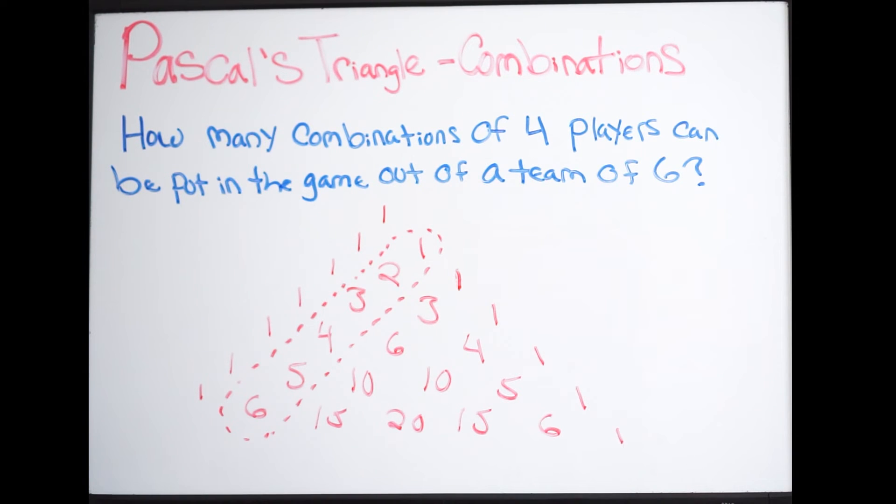And you always start at zero when you're using Pascal's triangle. So for example, this one is zero, one, two, three, and four. So I landed on that fifteen.